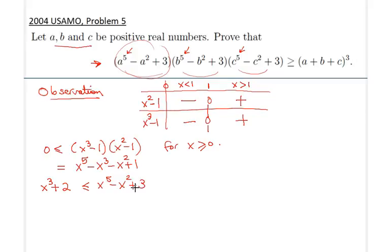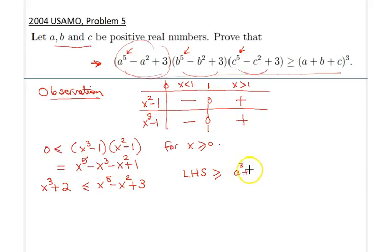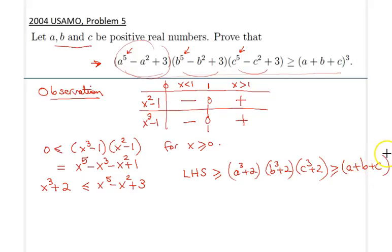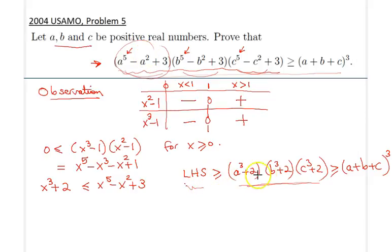This gives us a very good idea on how to simplify the original expression. The left hand side of our inequality is actually greater than or equal to (a³+2)(b³+2)(c³+2). We were able to represent the left hand side in this form, and since the left hand side of the actual inequality is greater than or equal to this, if we can prove the inequality for this product, it naturally solves the problem at hand.